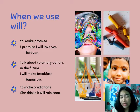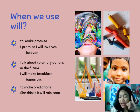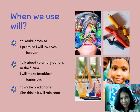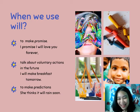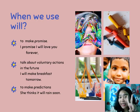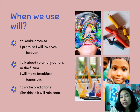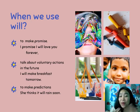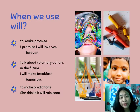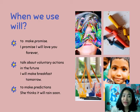When we use 'will': first, we can use will to make a promise — for example, 'I promise I will love you forever.' Second, we use will for voluntary actions in the future — for example, 'I will make breakfast tomorrow' (saya akan membuat sarapan besok), like offering to do something in the future. Third, we use will to make predictions — for example, 'She thinks it will rain soon.'